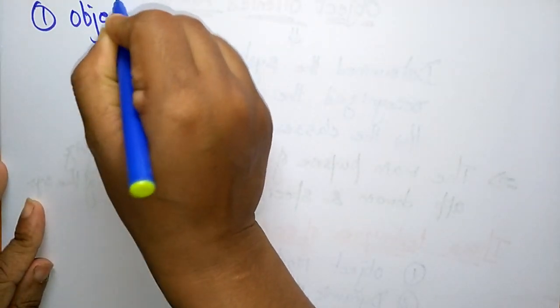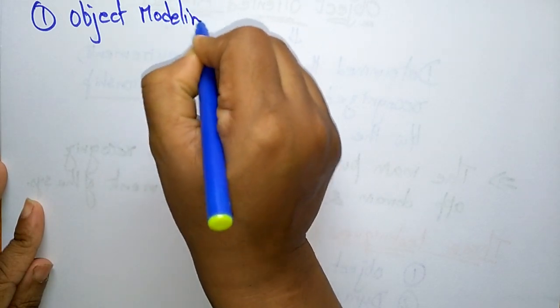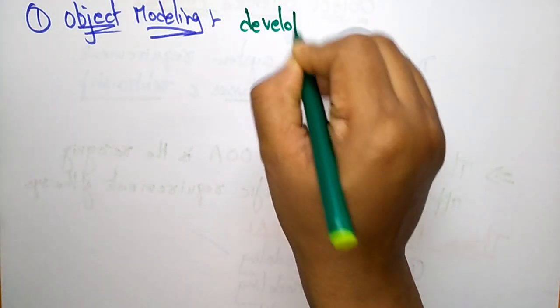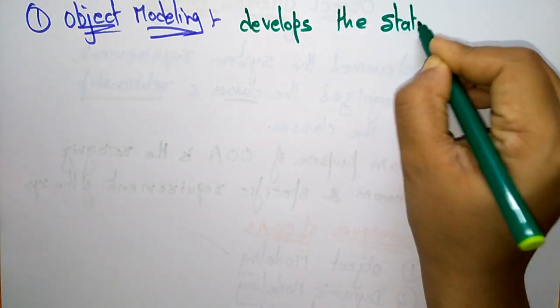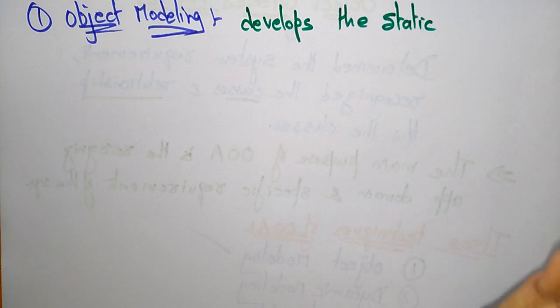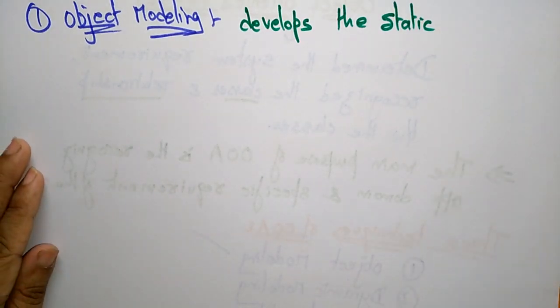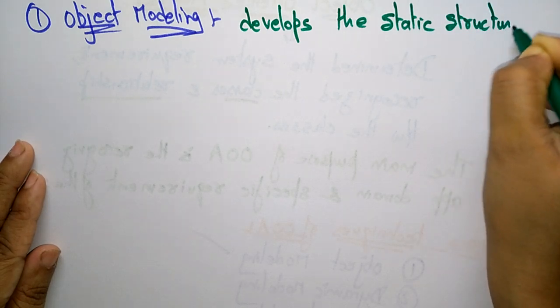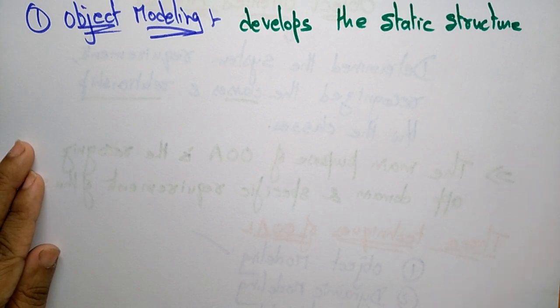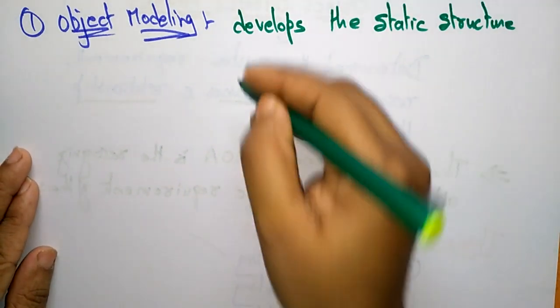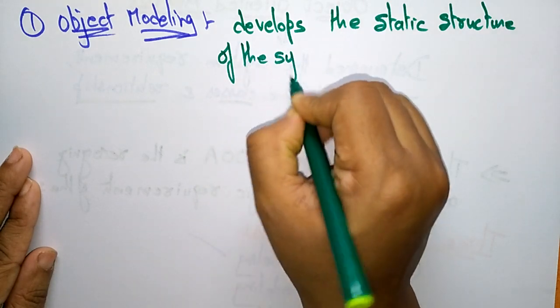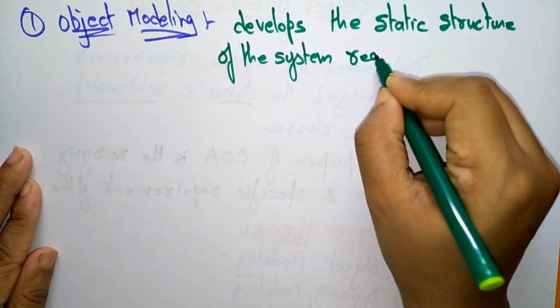Now let us see what Object Modeling is. Objects are instances of a class and real-time entities. Object modeling develops the static structure of the system — this is an important point to remember: object modeling develops the static structure, not the dynamic. Only static objects are created here.